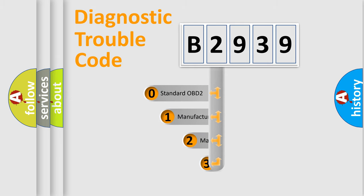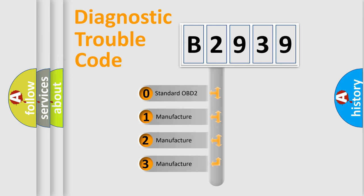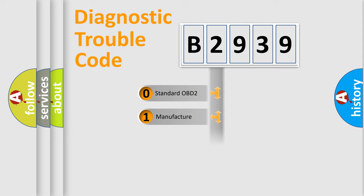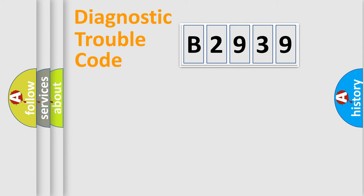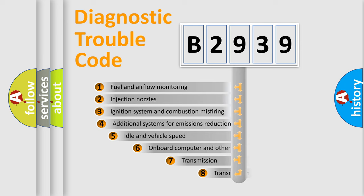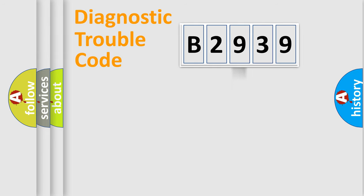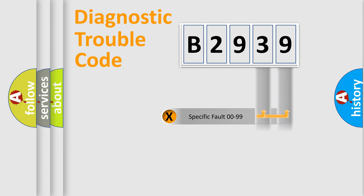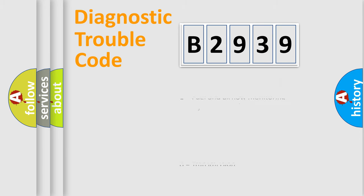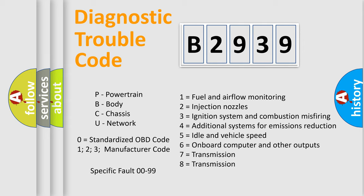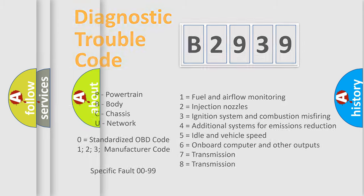This distribution is defined in the first character of the code. If the second character is expressed as zero, it is a standardized error. In the case of numbers 1, 2, or 3, it is a manufacturer-specific error. The third character specifies a subset of errors. This distribution is valid only for the standardized DTC code, and only the last two characters define the specific fault of the group. This division is valid only if the second character code is expressed by the number zero.